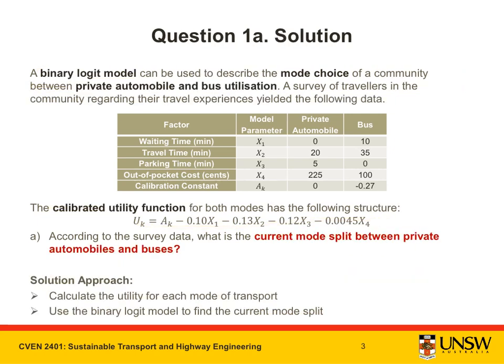Having extracted the key information from the problem, let's take a closer look at Part A. We need to determine the current mode split between private automobiles and buses. To do this, we first calculate the utility for each mode and then use these values and the binary logit model to infer the current mode split as required by the question.